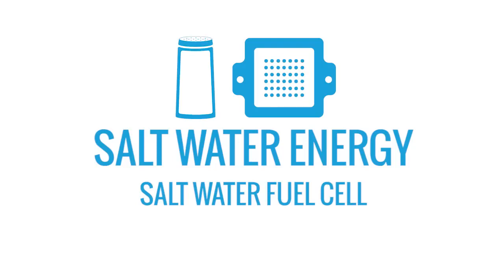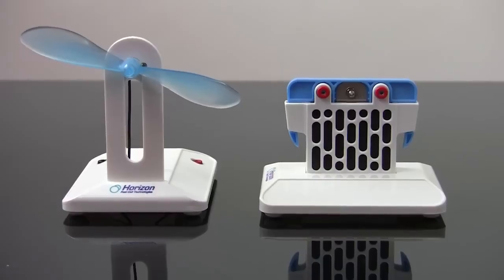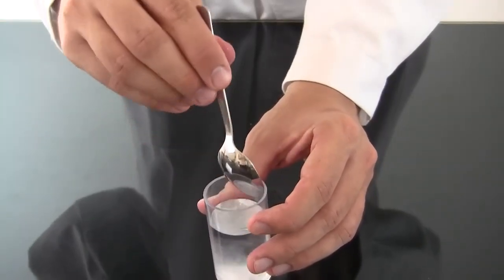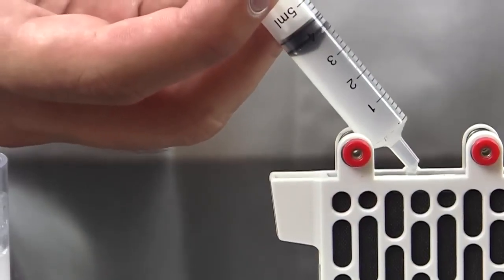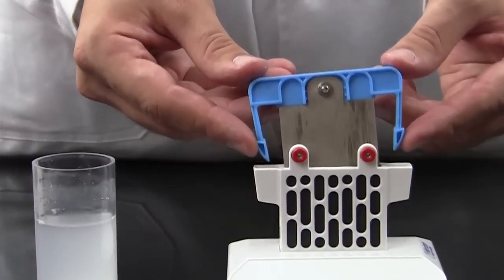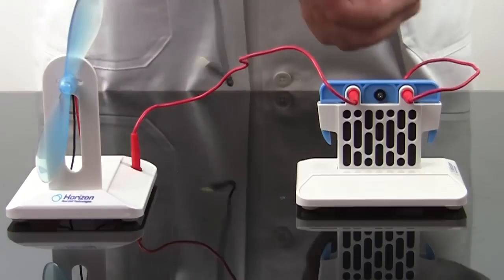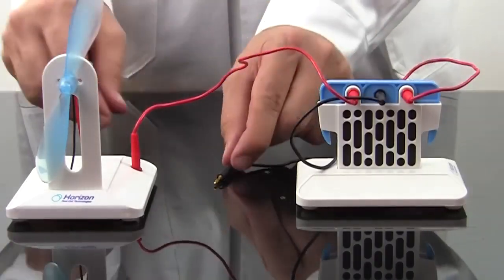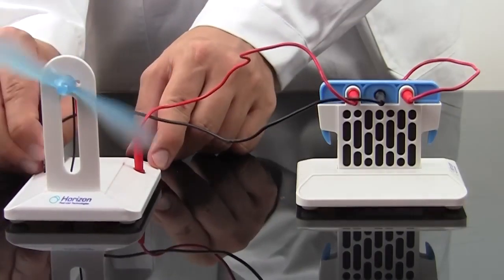The salt water fuel cell creates electrical energy with a small amount of salt water. Measure out your desired concentration and inject the water into the cell using the syringe. The magnesium anode easily snaps into place. Then connect the wires to the fan motor, and you'll start generating electricity right away.